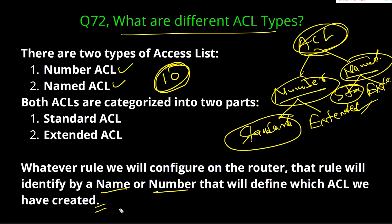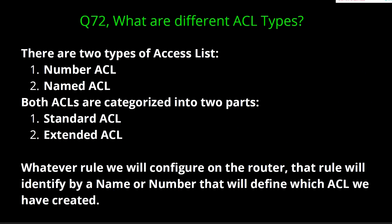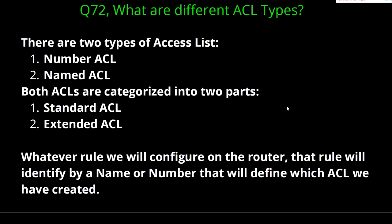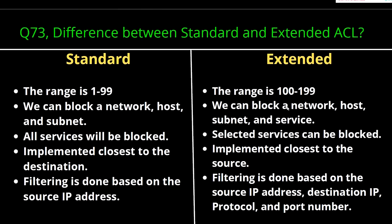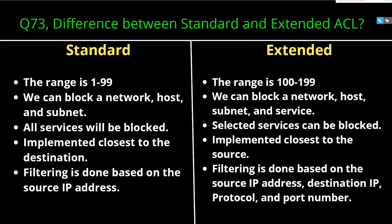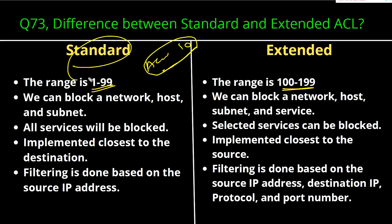There are two types of ACL: numbered ACL — with standard and extended subtypes — and named ACL — also with standard and extended subtypes. Now question number 73: What is the difference between standard ACL and extended ACL? The first difference is the range. The range of standard ACL is 1 to 99, and the range of extended ACL is 100 to 199. So if you create access-list 10, it is a standard ACL, and if you create access-list 101, it is an extended ACL.